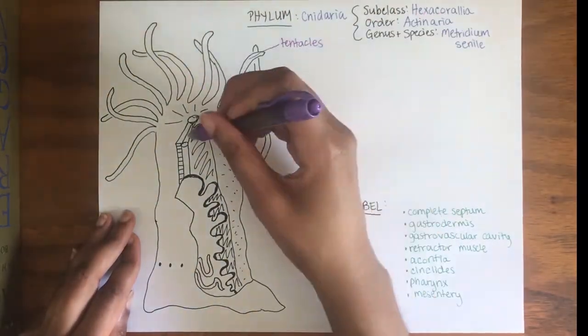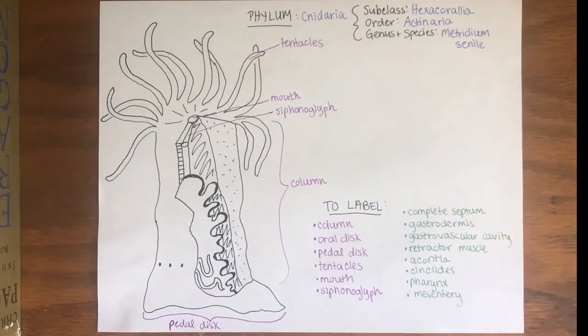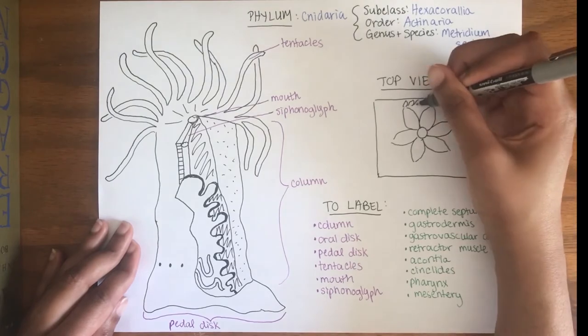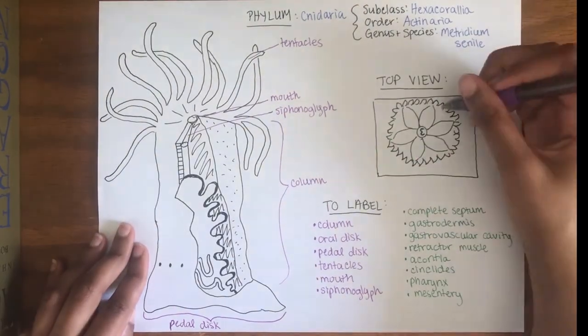Let's start by labeling the basic anatomy features labeled in purple. In our top-down view drawing, we can clearly identify the oral disc which encompasses the width of the mouth